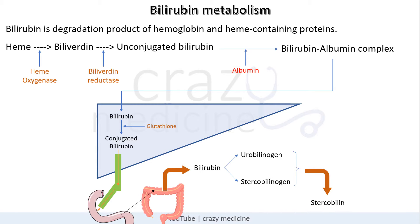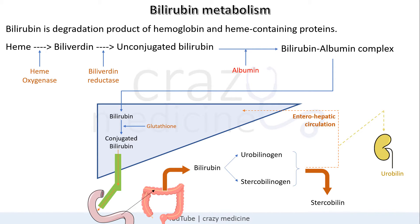The majority of these compounds are converted into stercobilin and excreted in feces. A very small amount, approximately 6-8%, enters the circulation and goes back to the liver — this is known as enterohepatic circulation. A very small amount of urobilinogen is excreted through the kidney in the form of urobilin, giving urine its normal yellowish color.